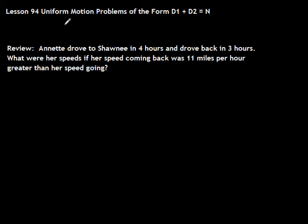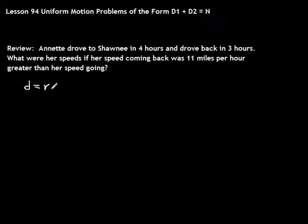Lesson 94: uniform motion problems of a different form than what we did before. Uniform motion problems are one of the hardest types of problems in Algebra 1, and we're going to redo them in Algebra 2, where they often become more clear. We'll start by reviewing a problem from last week. The main thing to keep in mind with distance problems is this formula: distance equals rate times time.